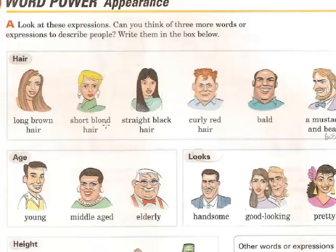Blonde is like yellow, so blonde is like yellow. This hair is short — short is the opposite of long. This hair is black but straight — 'straight' means 'liso.' And here we have curly — curly red hair.